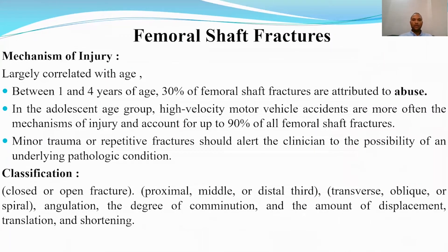The second topic is femoral shaft fractures. Regarding mechanism of injury, we should consider child abuse if the fracture occurs below the age of four years, as child abuse is the most common cause in this group. We should take a good history to exclude this mechanism.